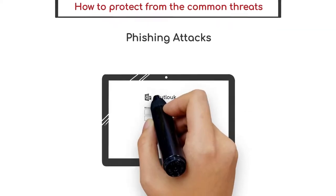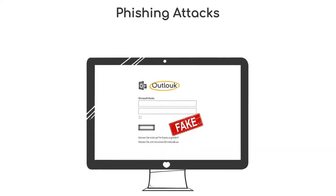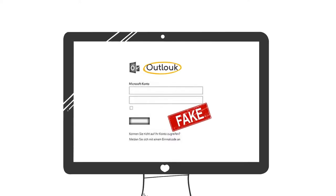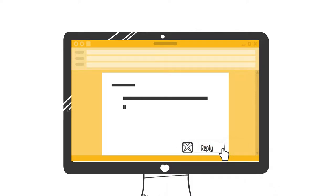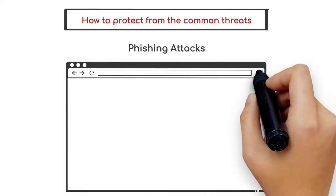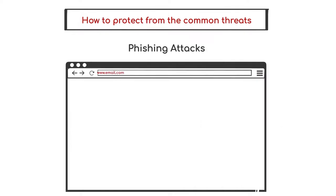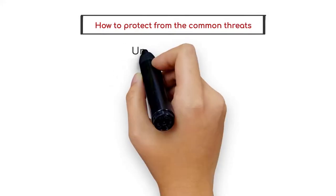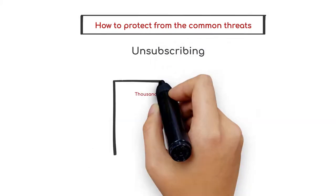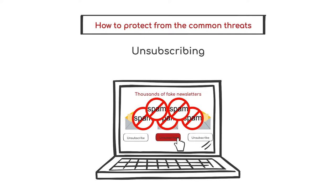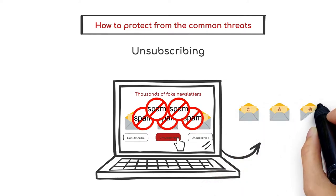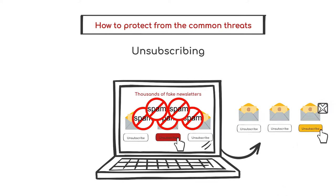Whatever form the phishing attempt takes, the goal is to fool you into entering your information into something which appears to be safe and secure, but in fact is just a dummy site set up by the scammer. Assuming you have already opened a phishing email, do not reply or click on the link in the email. If you want to verify the message, manually type in the URL of the company into your browser instead of clicking on the embedded link. A common technique used by spammers is to send out thousands of fake newsletters with an unsubscribe link at the bottom. Email users who enter their email into the supposed unsubscribe list are then sent loads of spam. So if you don't specifically remember subscribing to the newsletter, you are better off just blacklisting the email address.